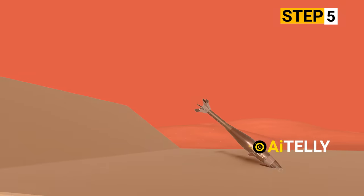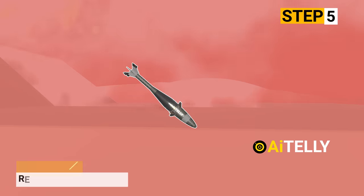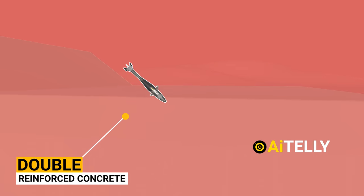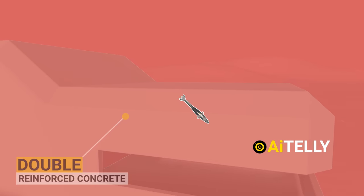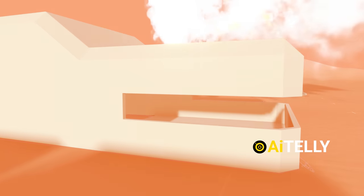Step 5: It is known to have the capability to penetrate double-reinforced concrete, as illustrated in these animations. The fuse at the front activates and initiates the warhead.